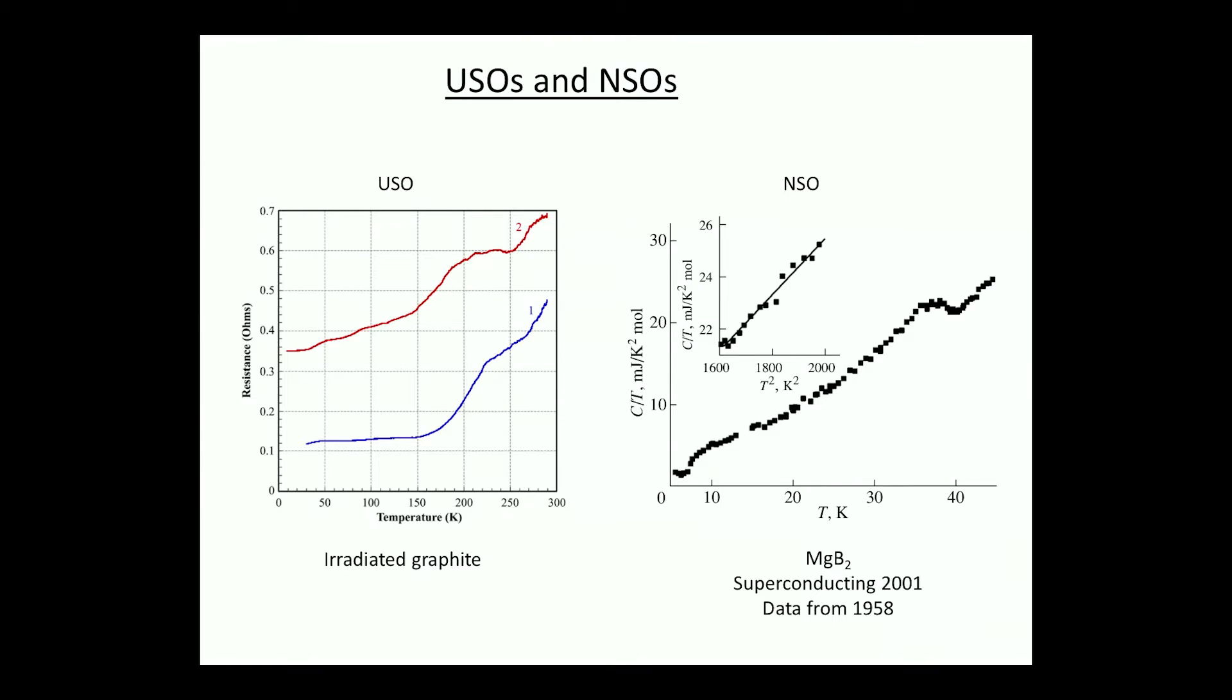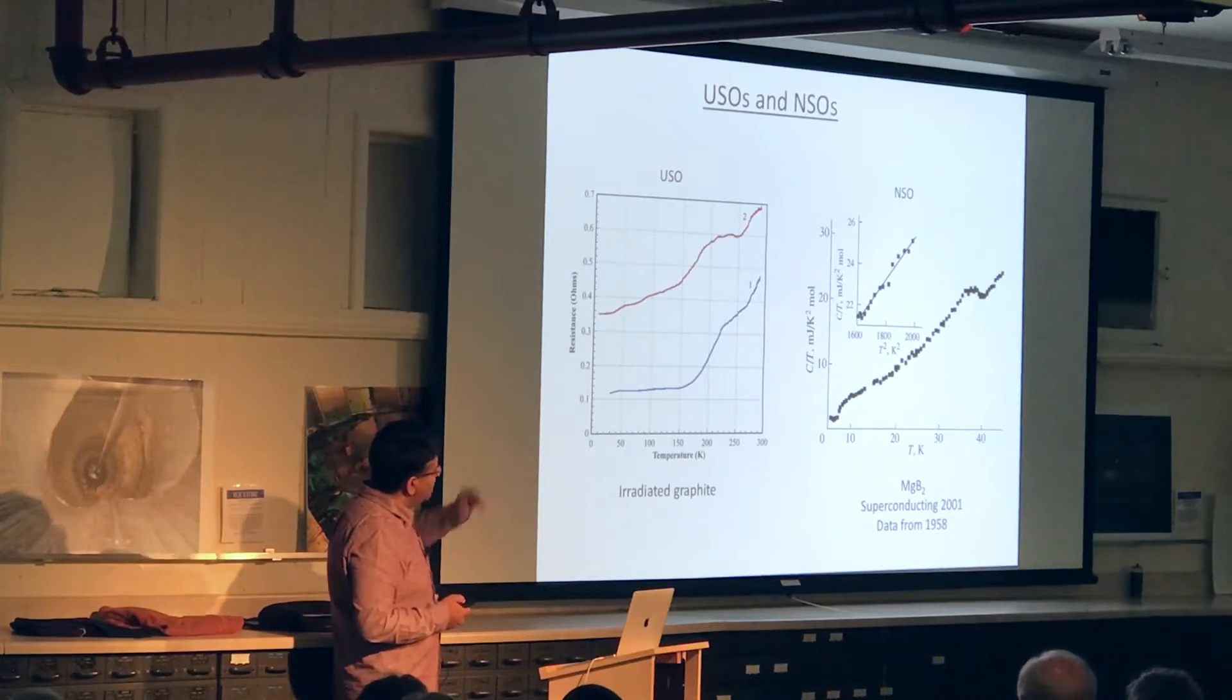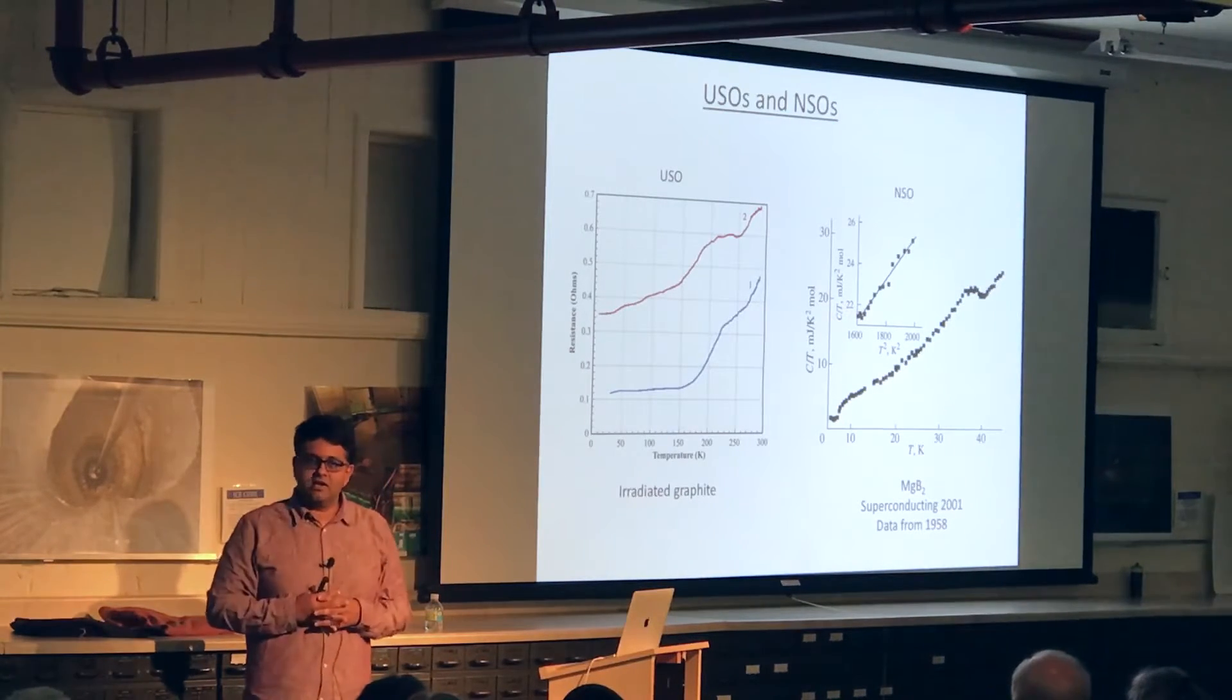And in fact, in modern magnets, magnesium diboride is now starting to make inroads into the magnet industry because it has such a high transition temperature. You can make magnets with magnesium diboride without using liquid helium.